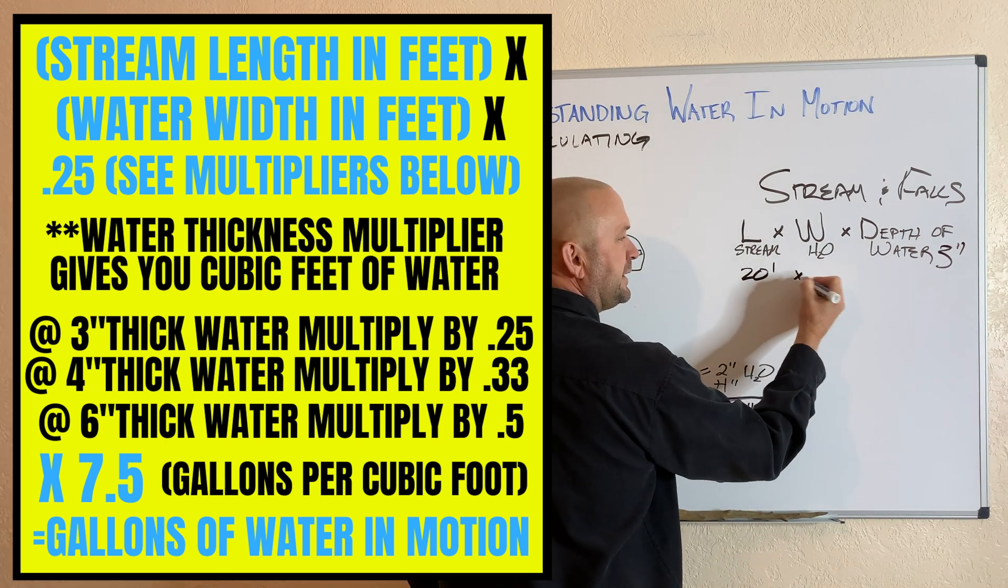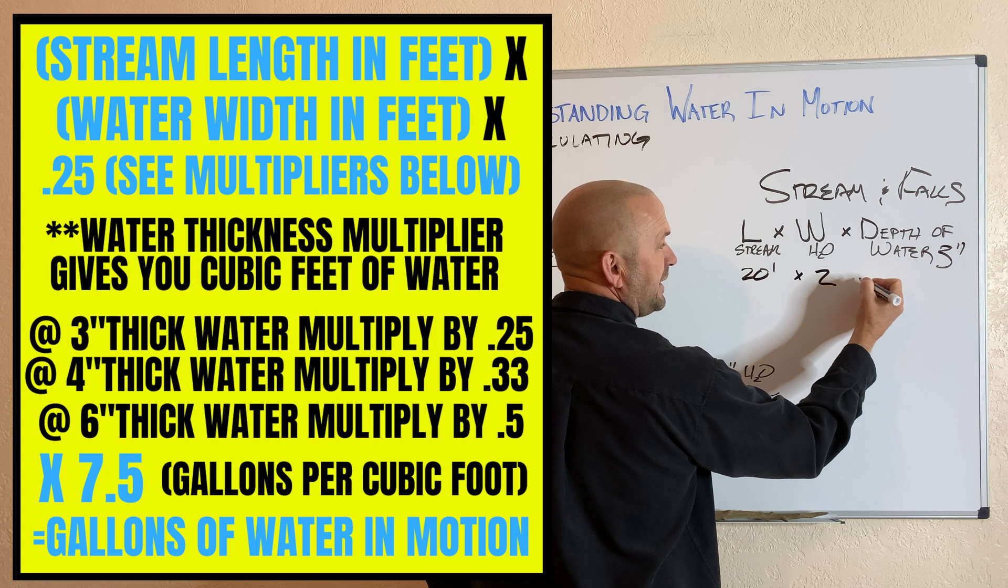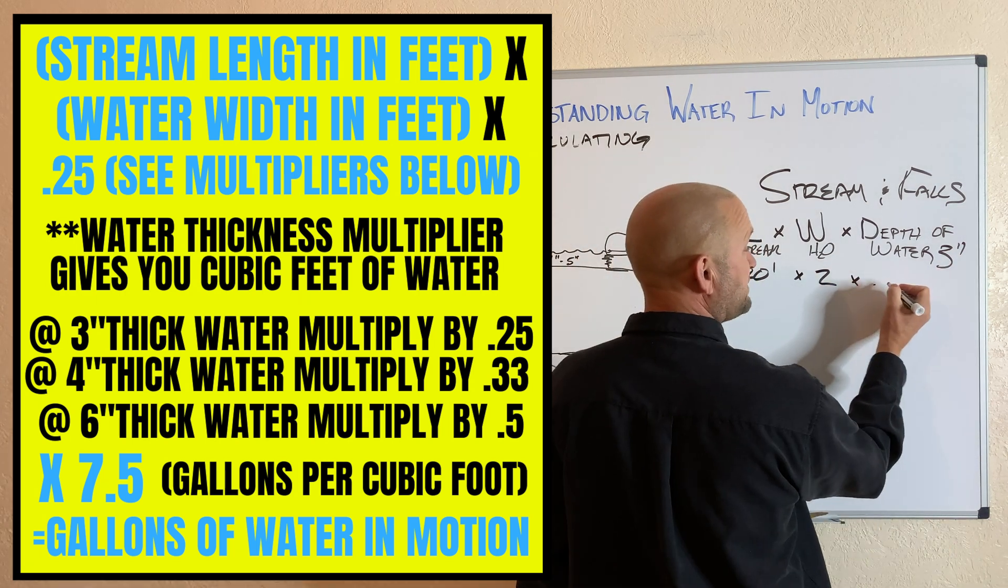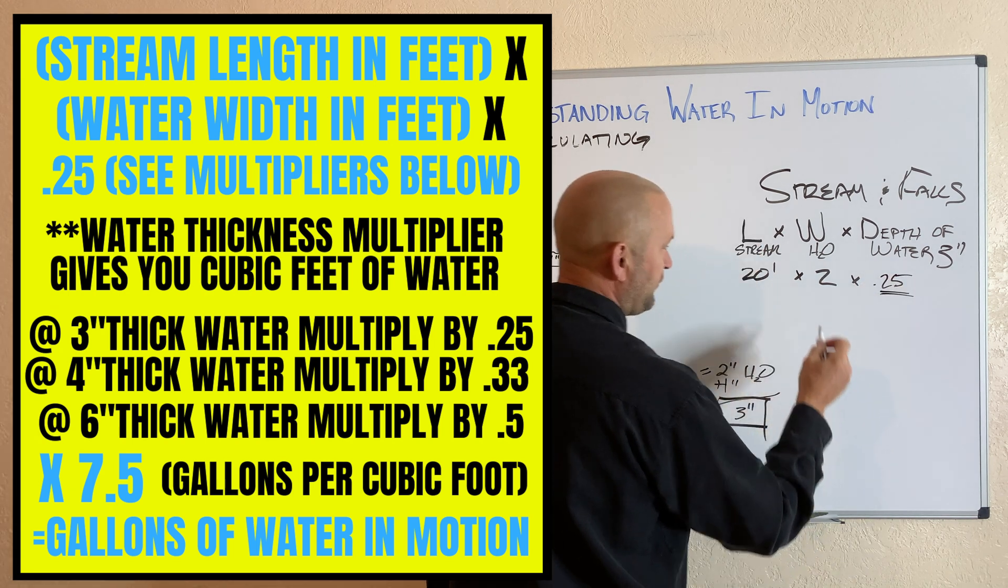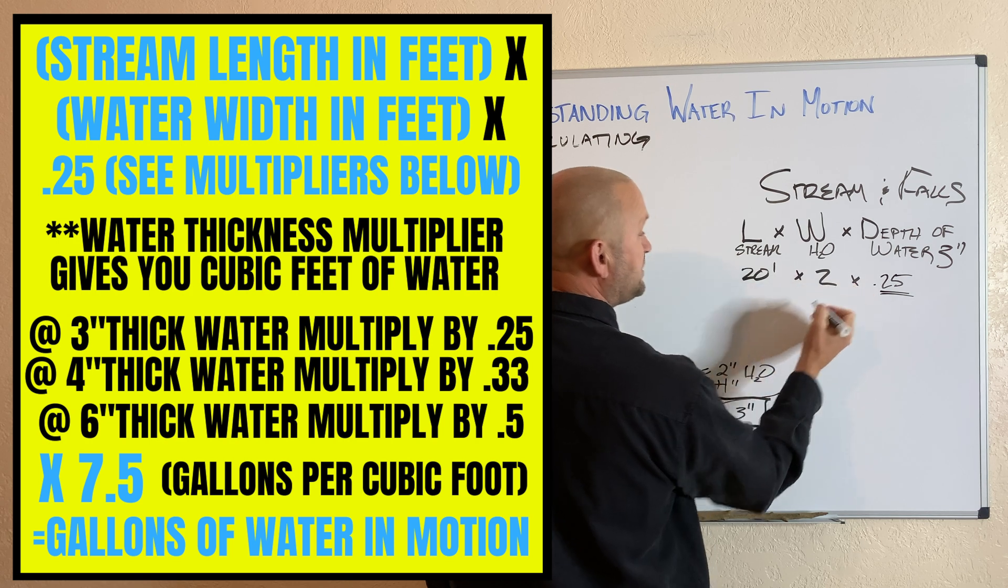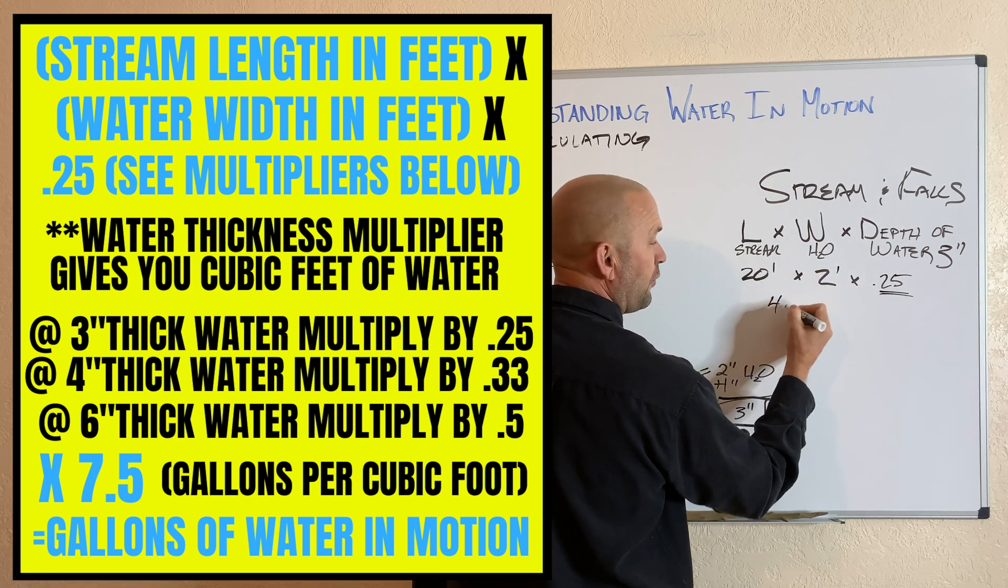So we're going to say my stream is 20 feet long, my water is two feet wide. My depth of water is three inches. We're going to go times 0.25. You got a cubic foot of water that I'm going to use that number times 7.5.